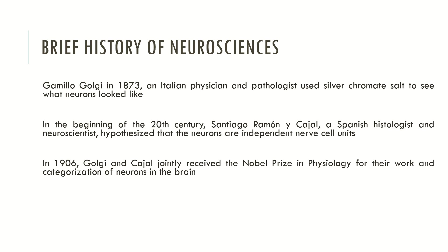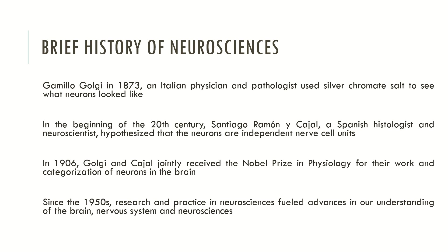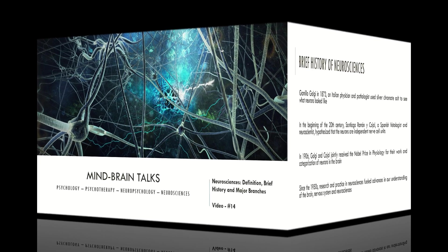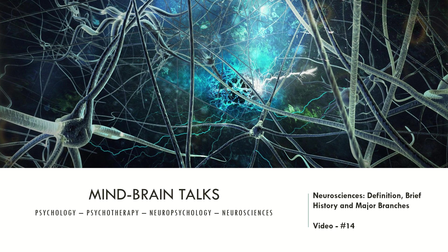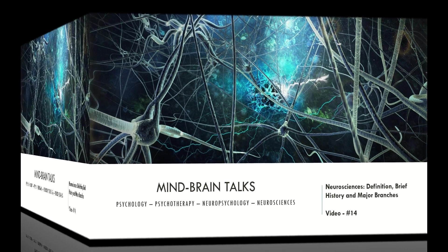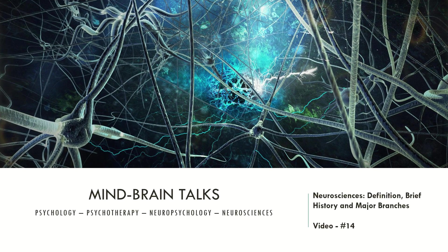Since the 1950s, research and practice in Neurosciences have driven advances in our understanding of the brain, nervous system and general neurosciences. There are many more pieces to cover in the history of Neurosciences, so in the future I will produce a more in-depth video showing how specific events and contributions were essential to understanding how neural networks work and how the brain produces cognition and behavior.